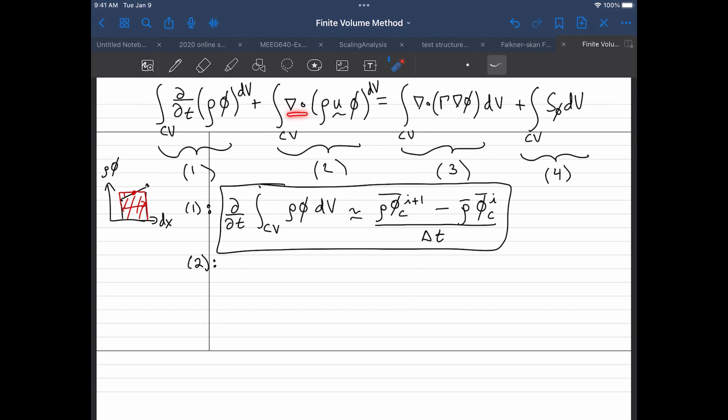So let's do that. The divergence theorem says that if I have an integral over a control volume that involves the divergence, I can convert that into a surface integral. This is where things get a little interesting.